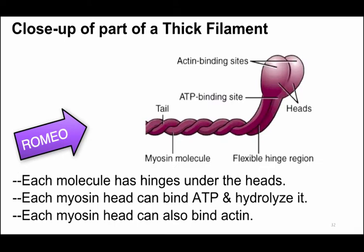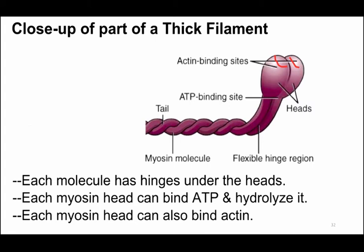Looking closely at a single myosin molecule: we have the tail — the braided shaft — and two myosin heads that each have a binding site for actin, plus two flexible hinge regions. There is also a binding site for ATP. Myosin is referred to as an ATP hydrolysis enzyme because it hydrolyzes ATP.